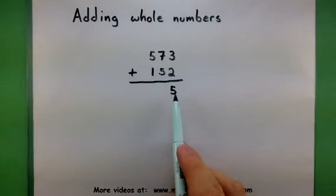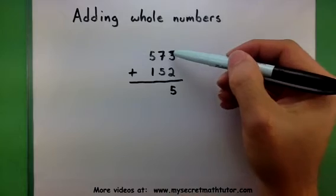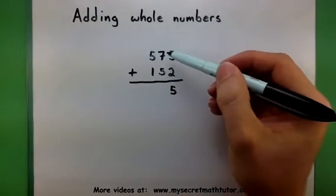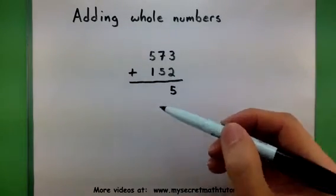And once I'm finished with this place value, I move on to the next one, and we add the next two numbers. So 7 plus 5, I get 12.